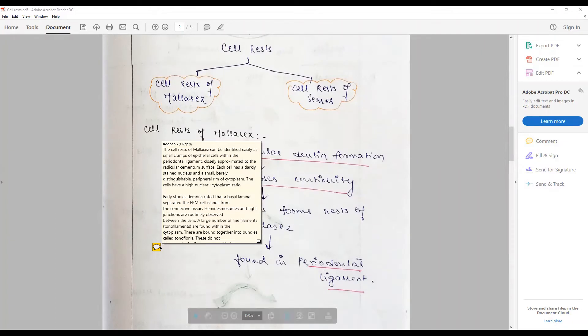Each of the cells has a darkly stained nucleus and a small, barely distinguishable peripheral rim of cytoplasm. The cells often have a high nuclear to cytoplasm ratio.